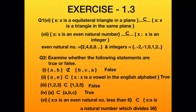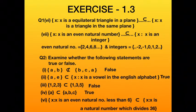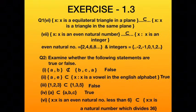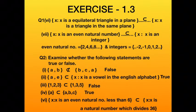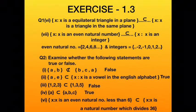Sixth part: the first set is {x : x is an even natural number less than 6} — that gives us 2 and 4. The second set is {x : x is a natural number which divides 36} — that gives 1, 2, 3, 4, 6, 9, 12, 18, 36. Both elements of the first set, 2 and 4, are present in the second set. The statement says 'subset', and this is correct. So this statement is true.